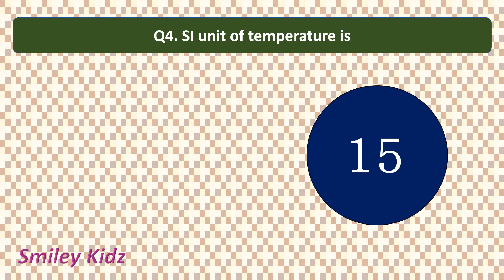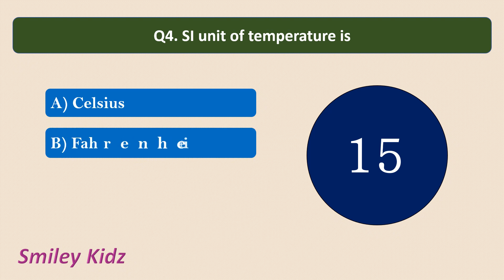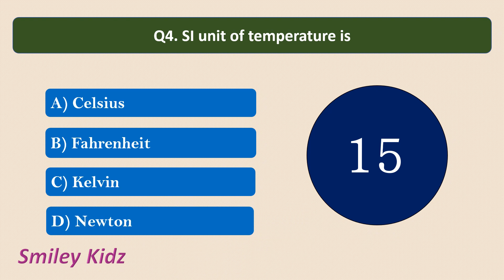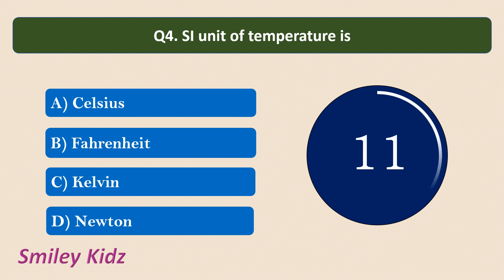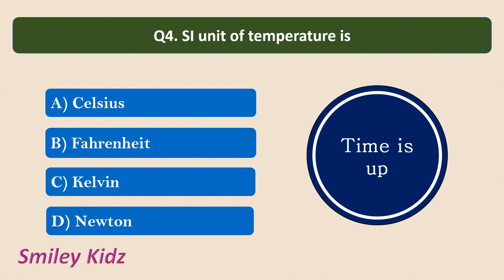Question number 4: The SI unit of temperature is — options are: Celsius, Fahrenheit, Kelvin, Newton. Your time starts now. Your time is up. The correct answer is Kelvin. The SI unit of temperature is Kelvin.